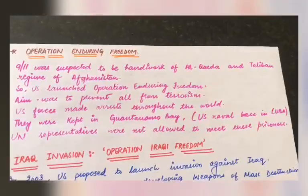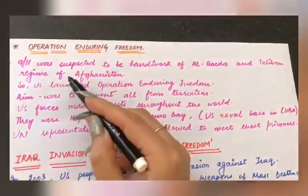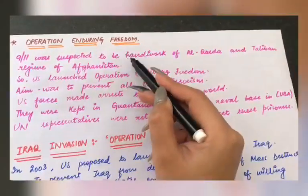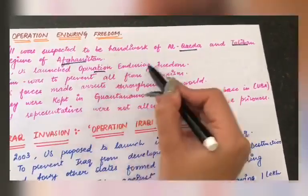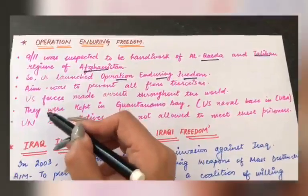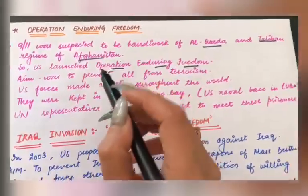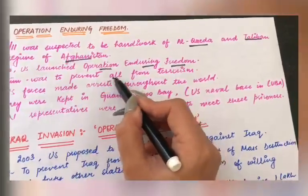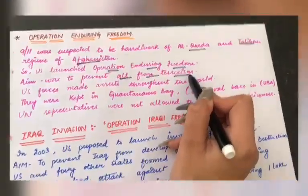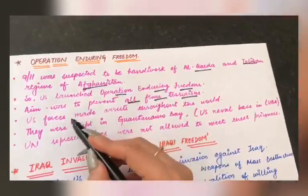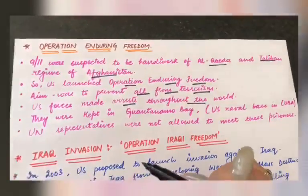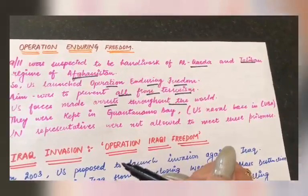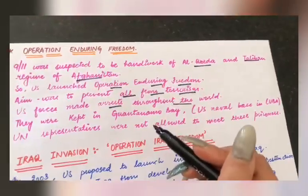The hardest step was named Operation Enduring Freedom, or the Global War on Terror. The 9/11 attack was suspected to involve Al-Qaeda and the Taliban. The US launched Operation Enduring Freedom with the main aim of preventing and eliminating terrorism — to stop terrorism and make terrorists answer for their actions. US forces arrested suspected terrorists from throughout the world. As you may remember from Class 9th or 10th when we discussed democratic rights, there is a place called Guantanamo Bay.